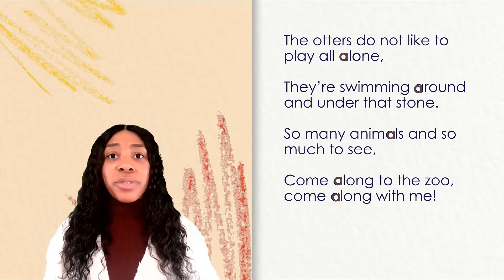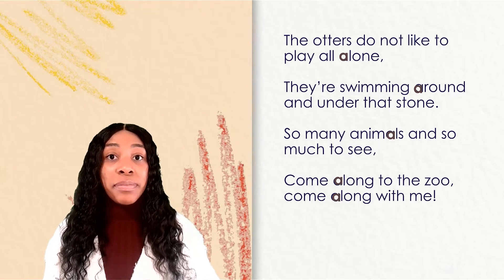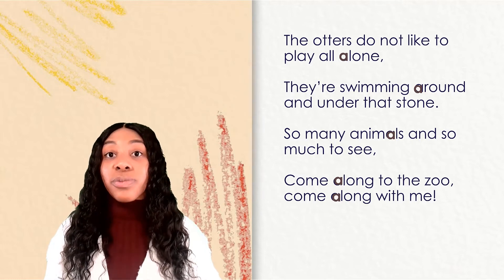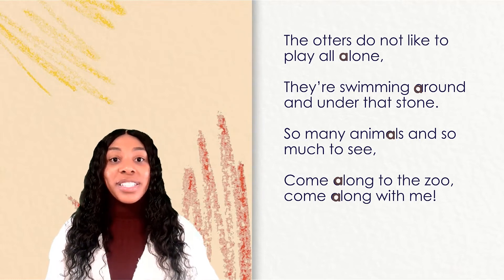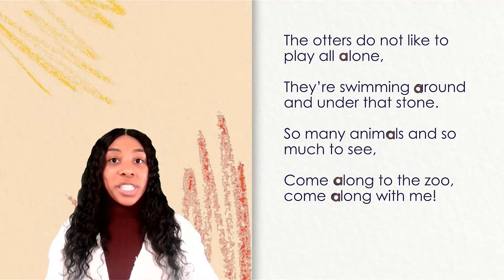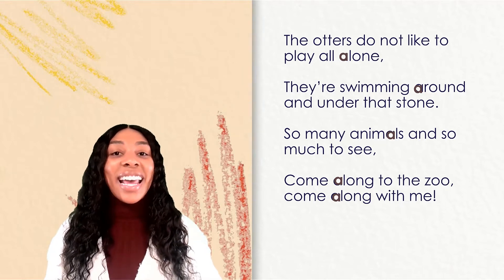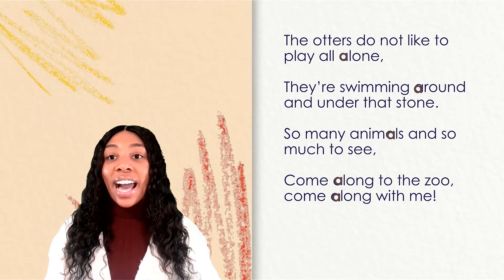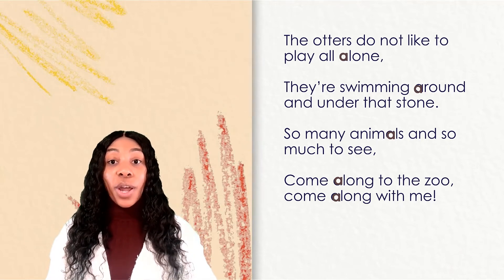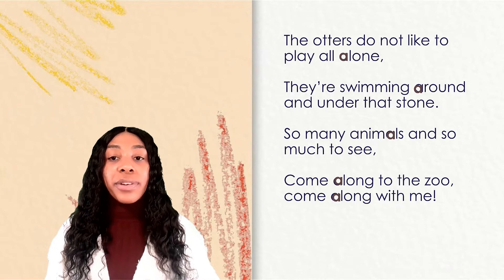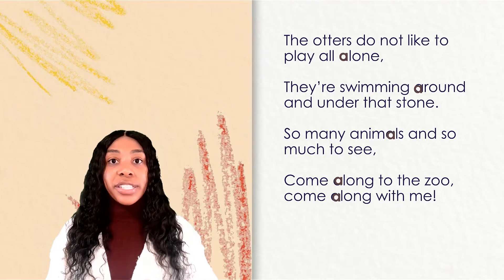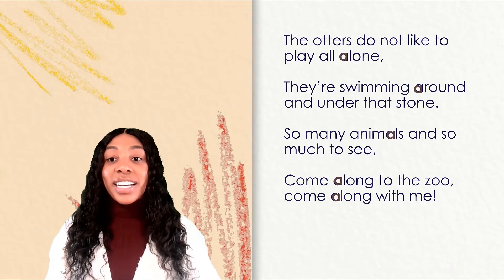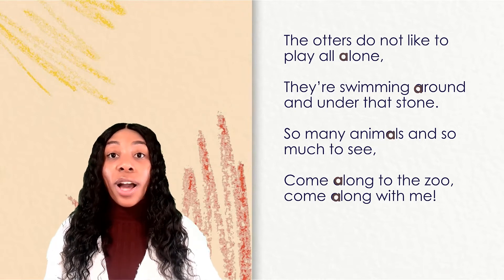But I want us to read this part one last time, and this time I want our focus to be on being fluent readers. Don't forget to read smoothly, with expression, with meaning, and at just the right speed. Here we go. The otters do not like to play all alone. They're swimming around and under that stone. So many animals and so much to see. Come along to the zoo. Come along with me.